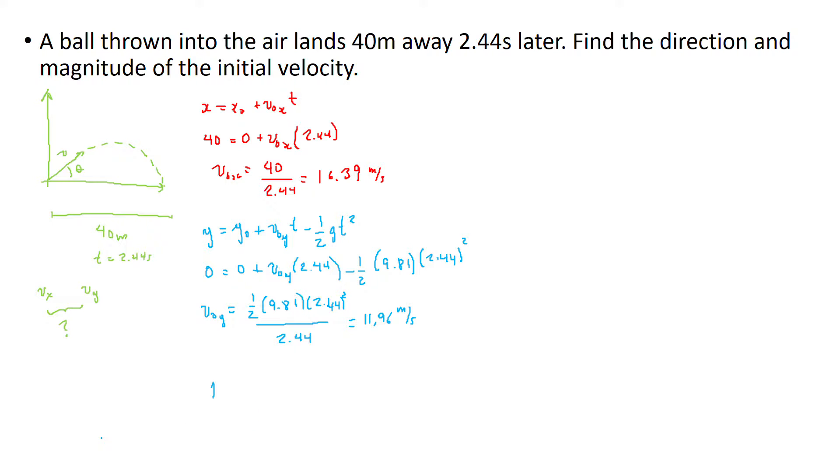If you remember, each time we saw a vector, you had x and y components. The x component we know already, we know already the y component. So it's easy now for everything. The velocity magnitude is gonna be the square root of the x component, that is 16.39 squared plus 11.96 squared, that is 20.3 meters over second.